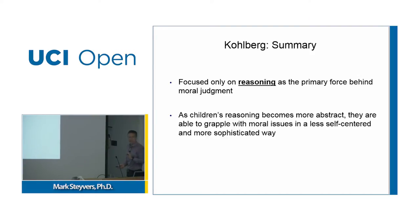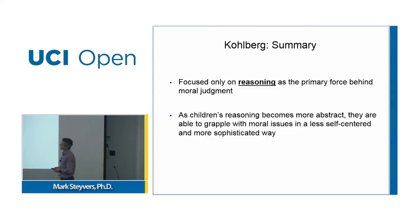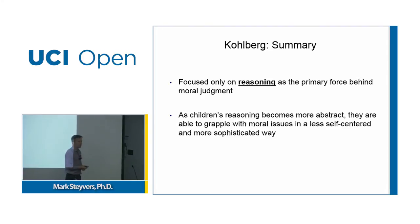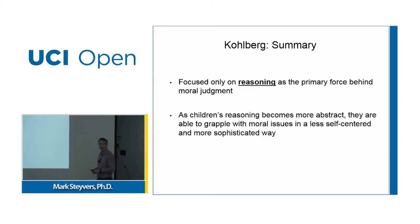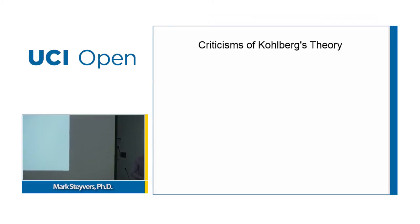The key idea of Kohlberg's theory about his hierarchy of moral reasoning is that it just focused on reasoning — there's nothing else to consider when we think about moral decisions. It's just a way of logically reasoning about a situation. He argues that as a child's reasoning becomes more abstract, they become less self-centered and think about more universal principles. Kohlberg's theory was very influential, but it's been criticized for a number of reasons.